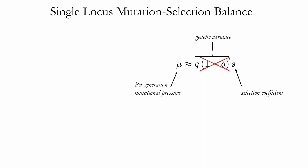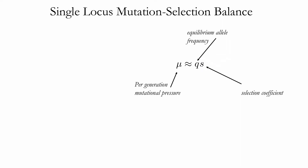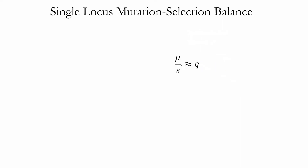If selection is strong, the frequency of the disease allele is approximately very close to zero, which allows us to ignore the 1-q term. We can simply divide the selection coefficient over to get the equilibrium frequency. This highlights a simple property of the one locus model: the frequency of a disease allele is highly sensitive to the fitness cost of disease. If we dramatically decrease the cost of disease, we expect a corresponding increase in the frequency of the disease allele, and vice versa.